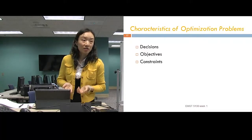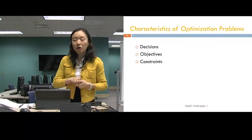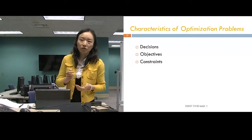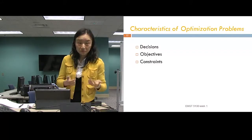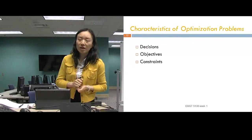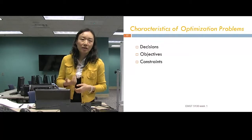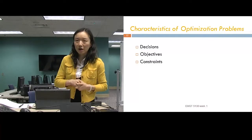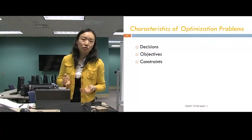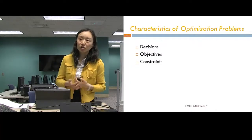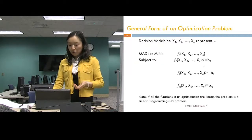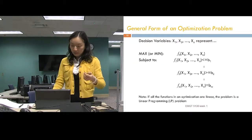There are also constraints because we are dealing with scarce resources. Constraints could be: we only have 10 minutes to go from A to B, or we only have 1,000 labor hours to produce all the products, or we only have 10 square feet to put all the furniture. These are all constraints that we need to formulate.